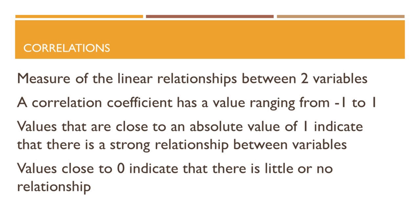Values closer to the absolute value of one indicate a strong relationship between the two variables being correlated, and values closer to zero indicate little or no linear relationship. A positive correlation indicates that there is a positive linear relationship between the variables — as one variable increases in value, so does the other.